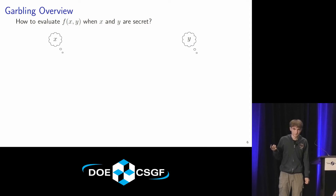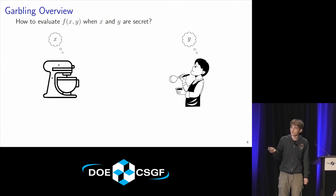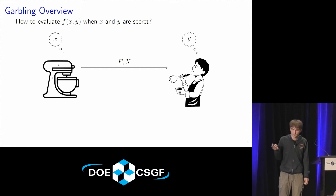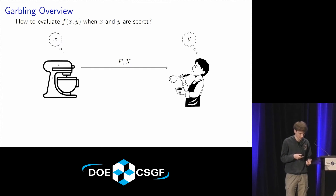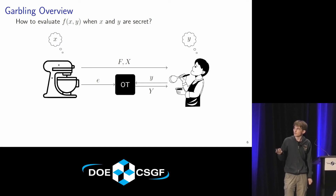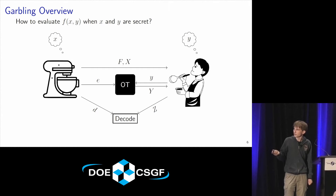How does garbled circuits work? Alice and Bob take on roles as the garbler and the evaluator. The garbler garbles their circuit — mixing it up to produce a garbled circuit F — and also produces garbled inputs X to pass to the evaluator. The garbled circuit consists of encrypted lookup tables mapping encrypted inputs to encrypted outputs for each gate. They do some oblivious transfers so Bob can put in his inputs Y and learn their garbled inputs to the circuit. Finally, the evaluator evaluates the garbled circuit and they decode the result together.